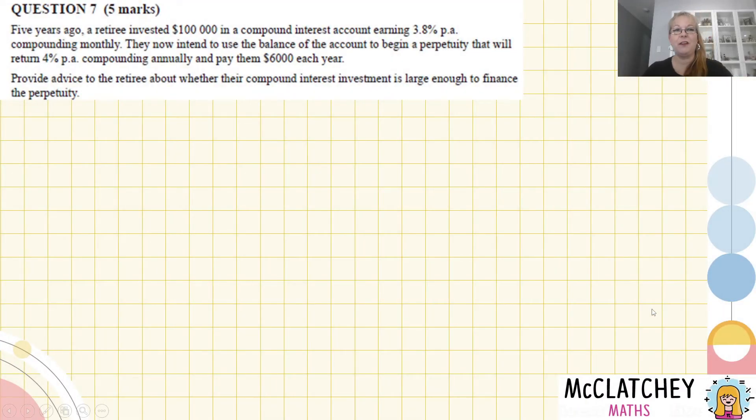Okay, let's get right into question seven. I know you're busting to get there. It's worth five marks. Five years ago, a retiree invested $100,000 in a compound interest account earning 3.8% per annum compounding monthly. They now intend to use the balance of the account to begin a perpetuity that will return 4% per annum compounding annually and pay them $6,000 per year. Provide some advice to the retiree about whether their compound interest investment is large enough to finance the perpetuity.